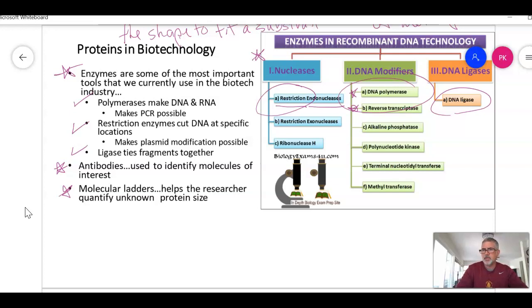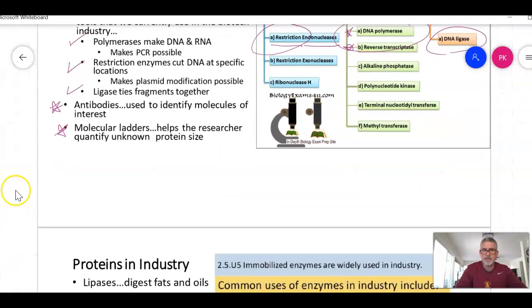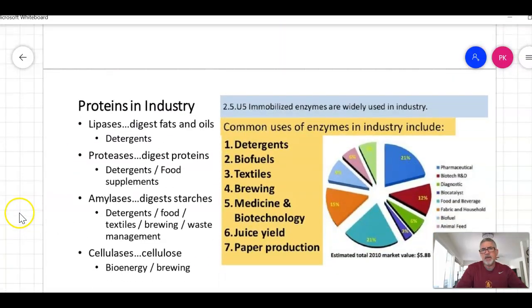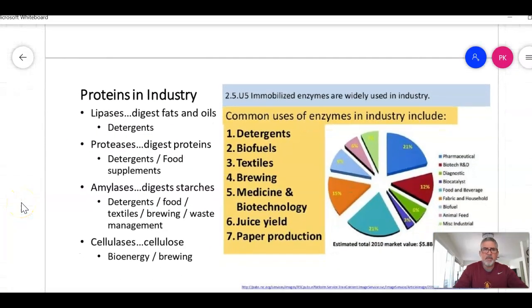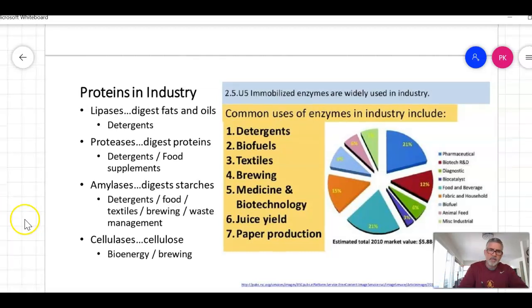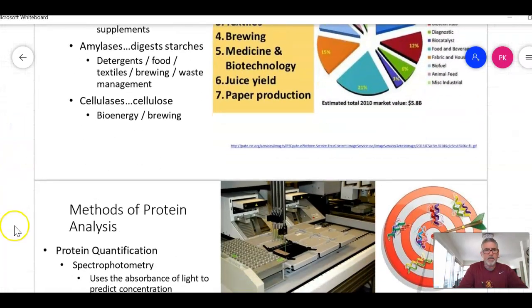Make sure you know the category. Restriction enzymes are in nucleases, polymerases and reverse transcriptase are in DNA modifiers. But there are other things too. We have lipases, proteases, amylases, cellulases. If you think about all of these different things, pharmaceutical, research and development, diagnostics, to make more catalysts in the food beverage industry. I know this is a 2010 market value, but it just shows you there's so much that biotechnology produces proteins for.